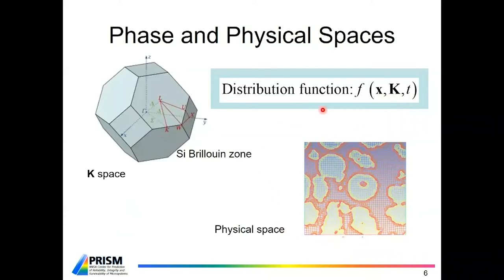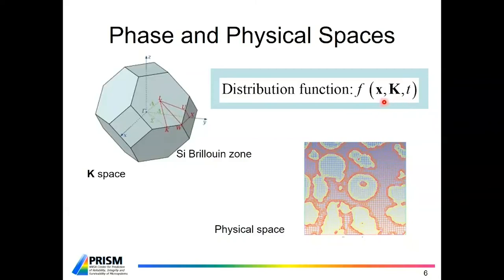Physical space, of course, you all know — it's like every other CFD problem that you deal with. You have a physical space, in this case showing a composite medium with particles distributed in a matrix, which you'd discretize in the usual way. But corresponding to every point in space is a whole space of the wave vector k, described by a Brillouin zone tied to the crystal structure of the material. We are trying to deal with two spaces: x, which is physical three-dimensional space, and k, which is wave vector space, also three-dimensional. So unsteady problems have a dependence on seven different variables — three space, three k, and one time — making the problem very complicated and very expensive to solve.